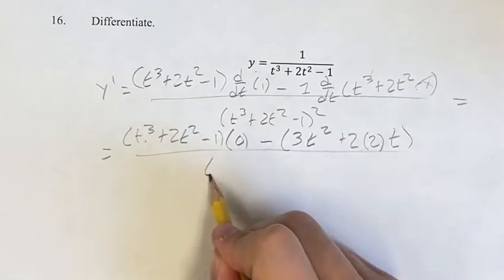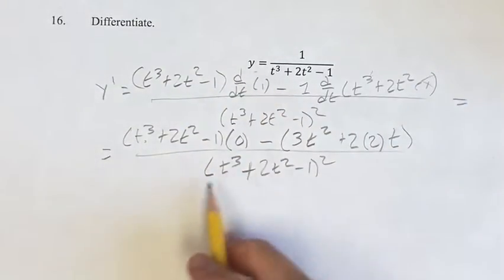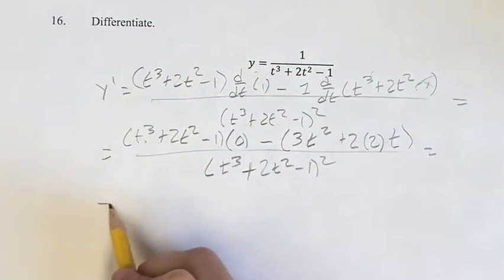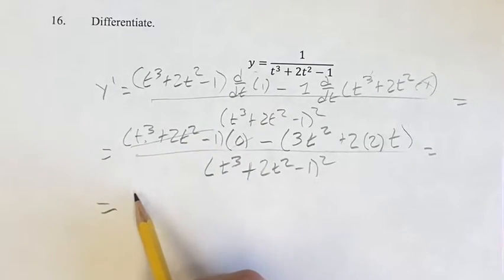This is over t cubed plus 2t squared minus 1 squared. You can distribute this out, but it's not helpful, so I won't do it. Since the first term times 0 is 0, we just have the negative of the second term.